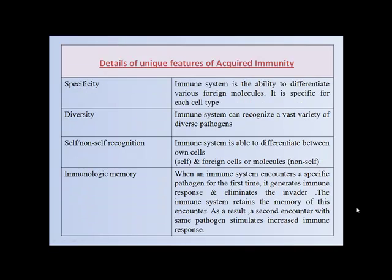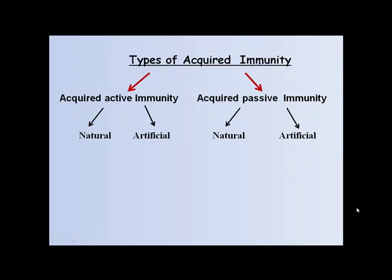Details of these unique features of acquired immunity are shown in the chart. There are different types of acquired immunity: acquired active immunity and acquired passive immunity. In acquired active immunity, there is natural and artificial. In acquired passive immunity, there is also natural and artificial.